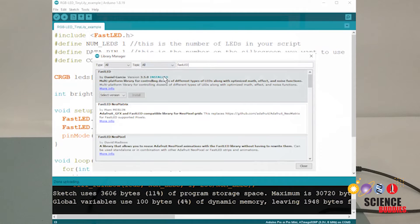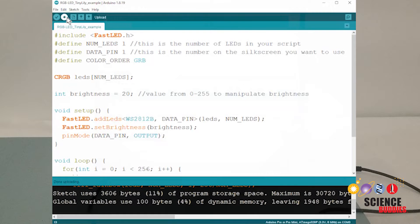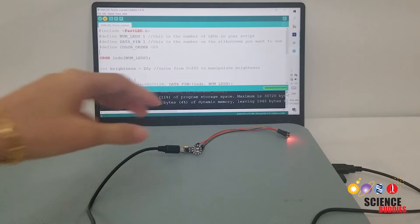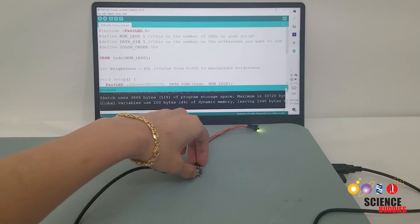Now, upload the code onto your TinyLily mini processor. You should see the LED light up and cycle through the colors of the rainbow.